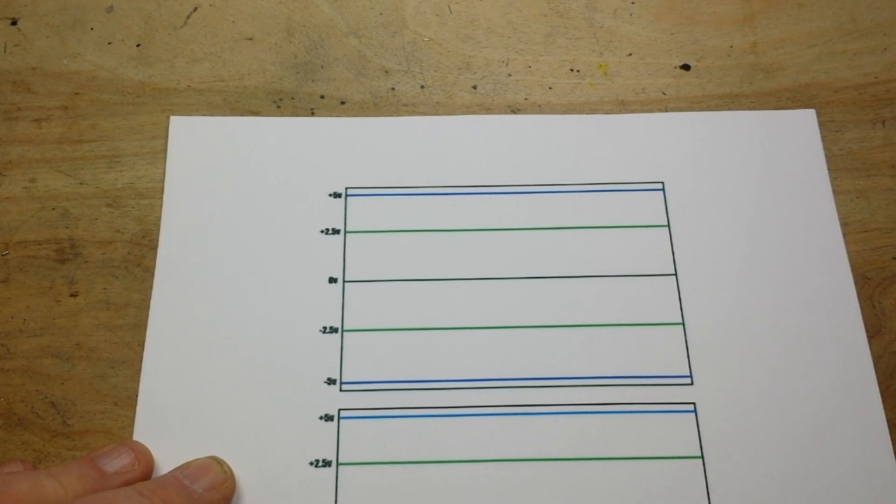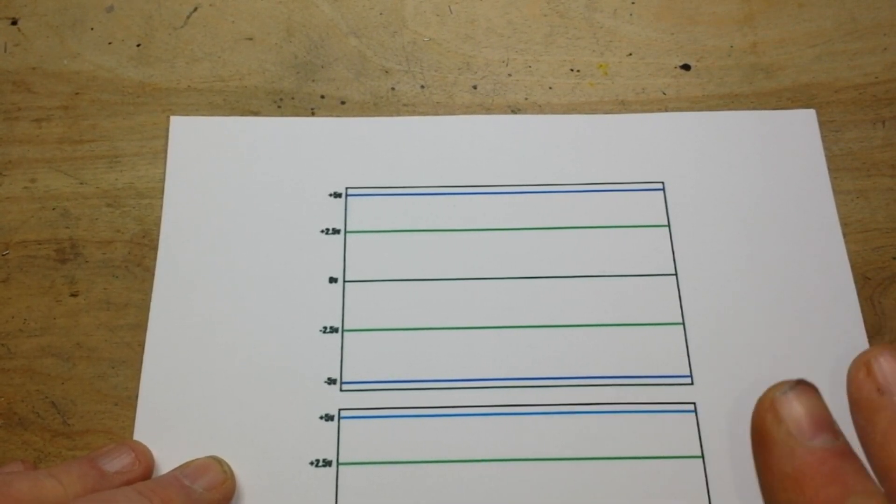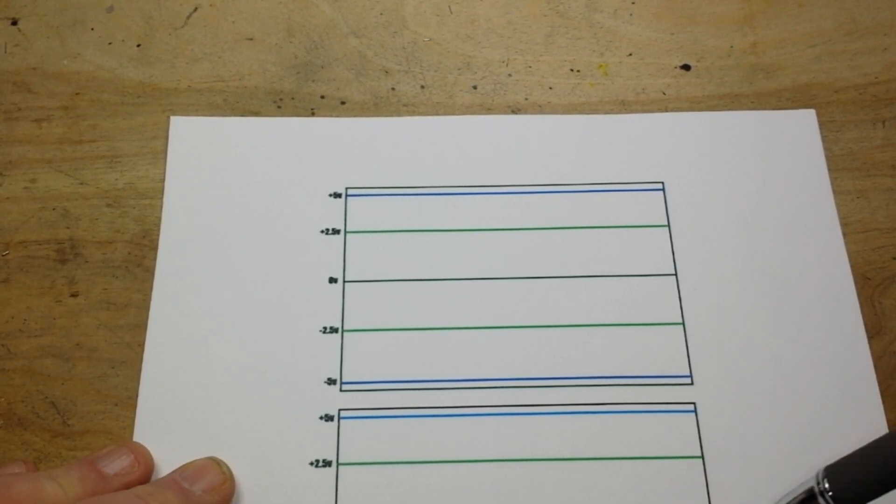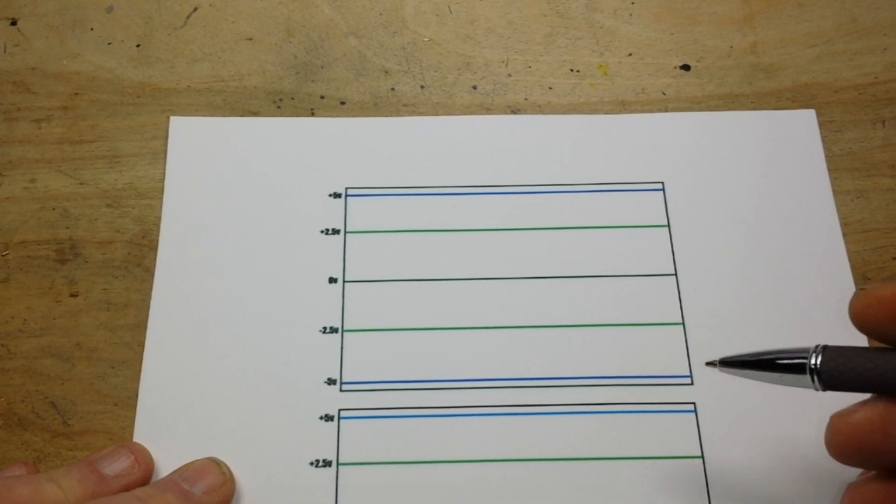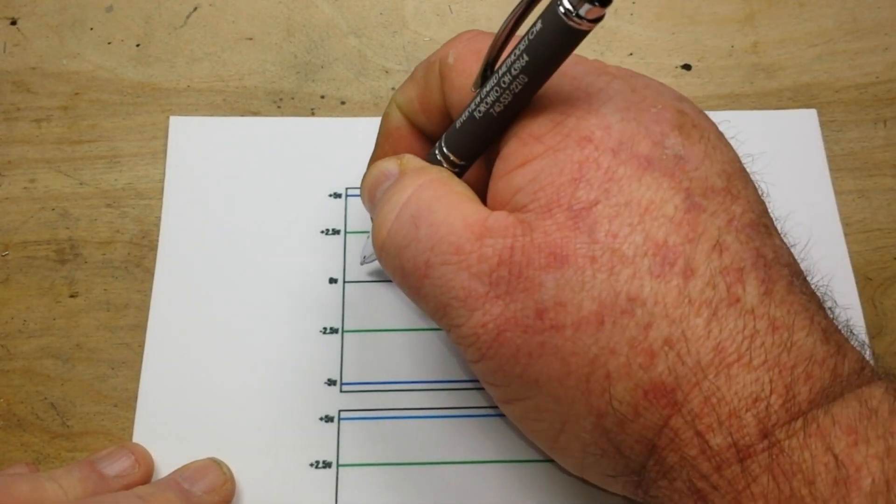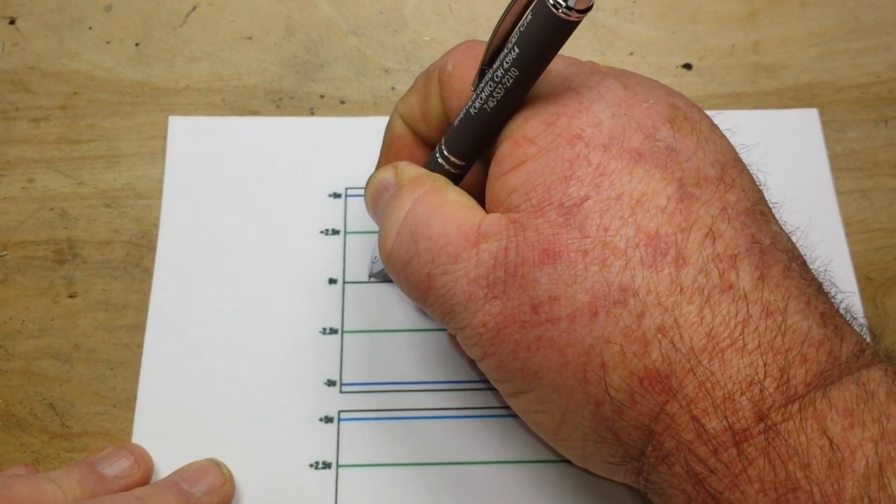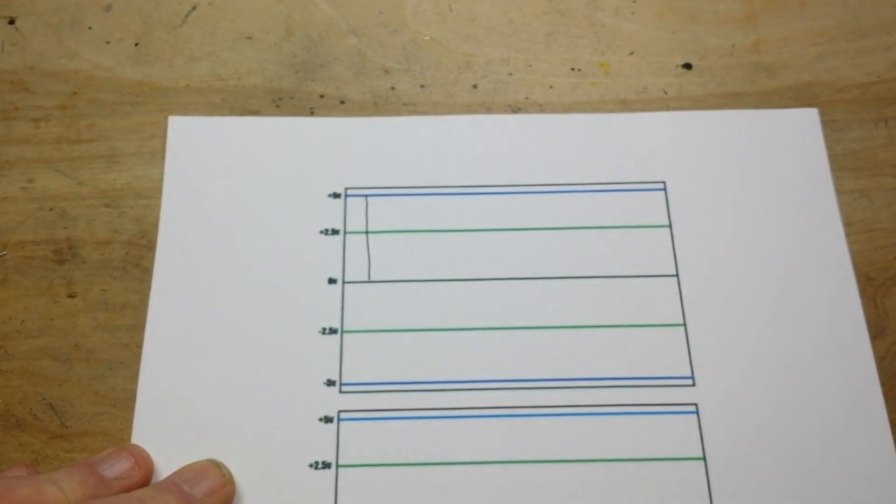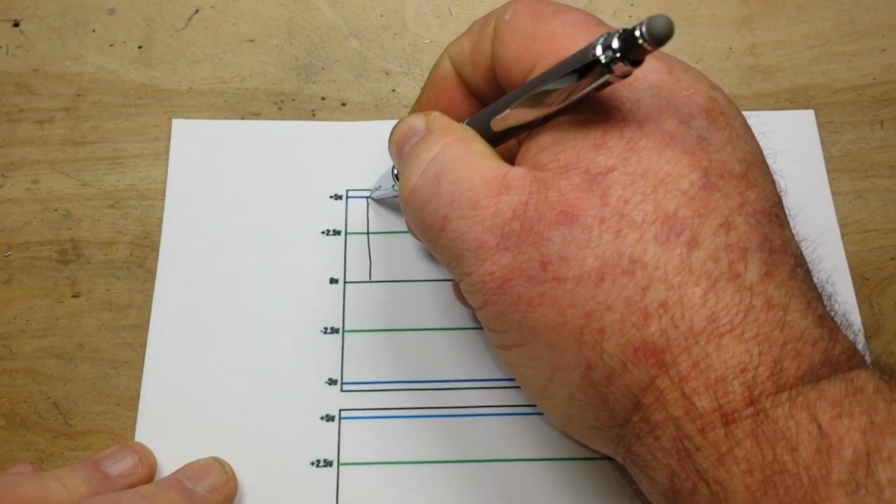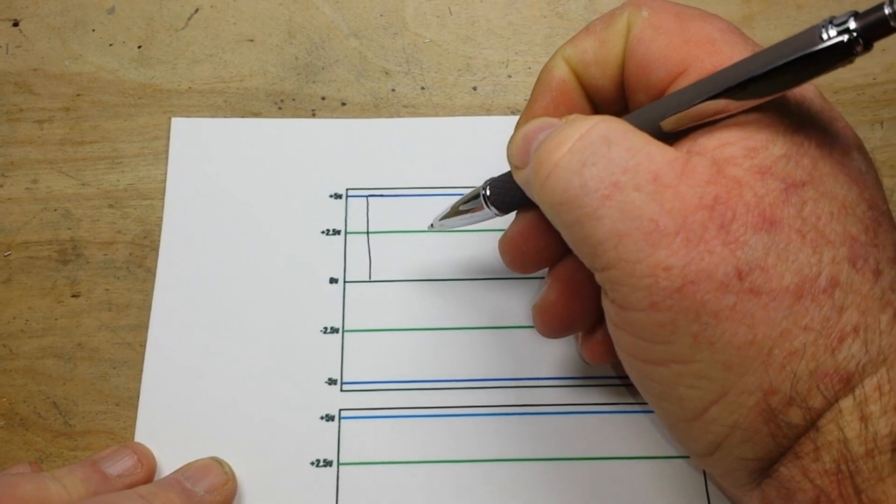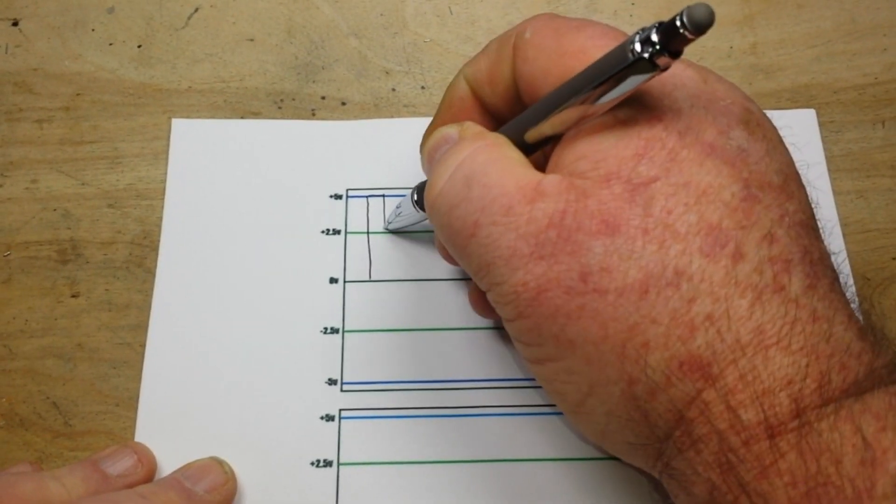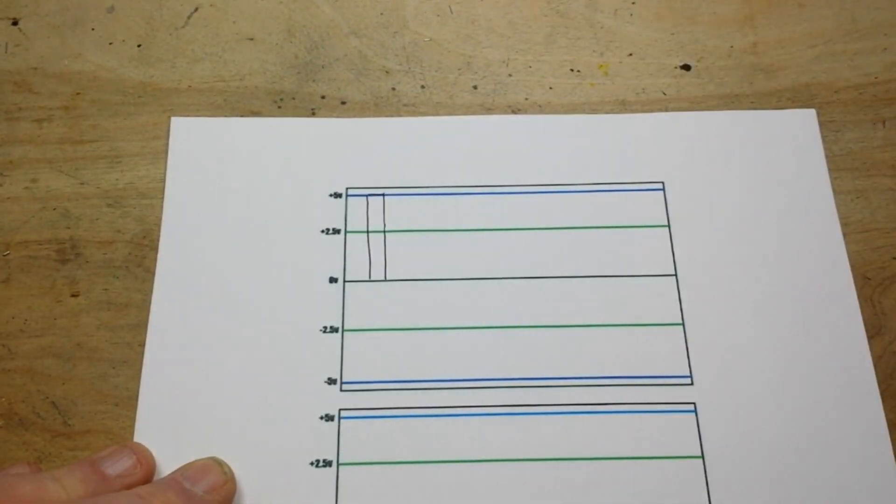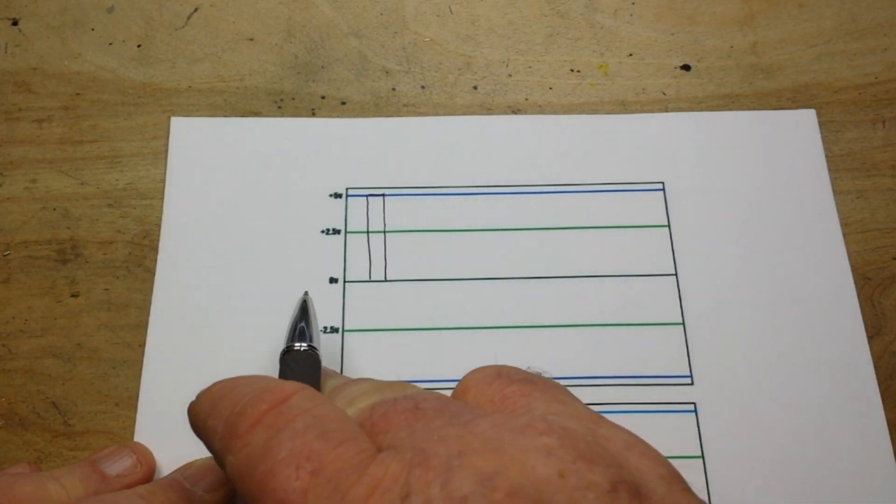So the first thing we want to talk about are pulses. This is the most basic signal. A pulse is a sudden brief increase in current flow, that's it. Now your ideal pulse would have an instantaneous rise, stay on for some amount of time, and an instantaneous decrease back to the beginning point, which in this case we'll call zero volts.